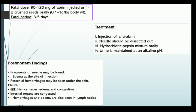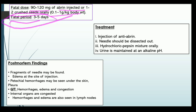The fatal dose includes 90 to 120 milligrams of abrin injected, or one to two crushed seeds orally administered — approximately 0.1 to 1 gram per kg body weight of the person. The fatal period often varies from three to five days.